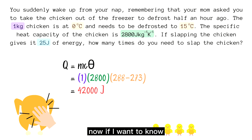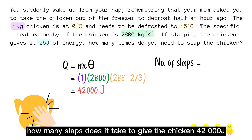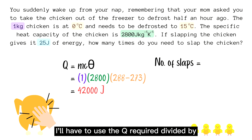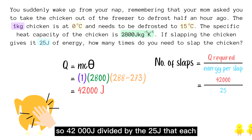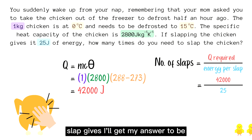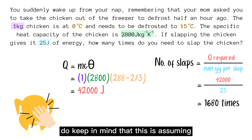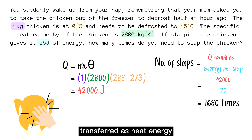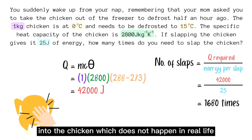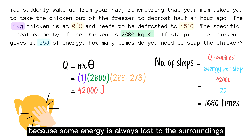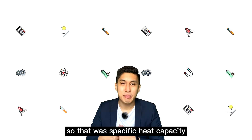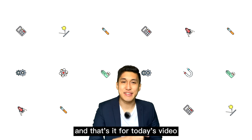Now if I want to know how many slaps it takes to give the chicken 42,000 joules, I'll have to use the Q required divided by the energy given per slap. So 42,000 joules divided by the 25 joules that each slap gives — I'll get my answer to be 1680 times. Do keep in mind that this is assuming all the energy from the slap is transferred as heat energy into the chicken, which does not happen in real life because some energy is always lost to the surroundings.